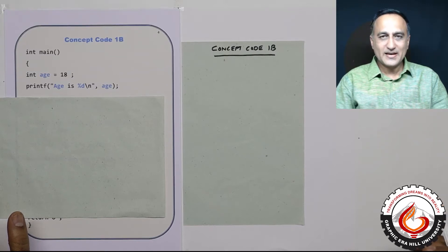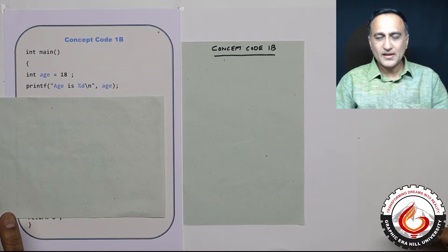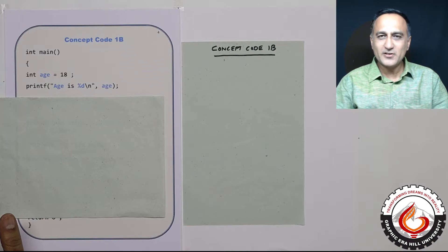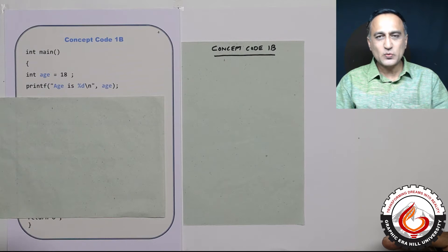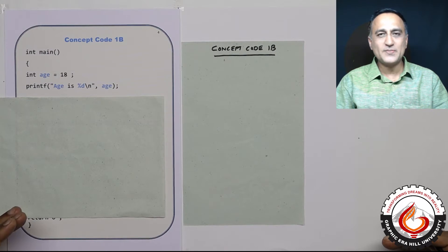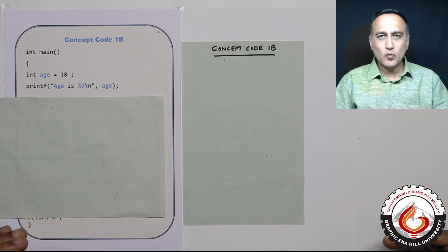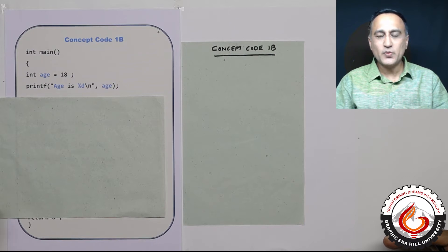This is our second concept code on pointers, which is going to further your understanding. If you have understood the first one, this will be really simple. The first one and one B will build all your basics and concepts required to understand pointers. Let's follow what the code does and diagrammatically represent what it is trying to do so that we can understand pointers very clearly.